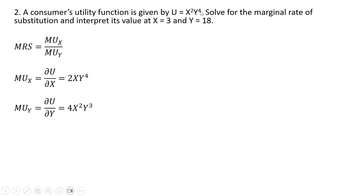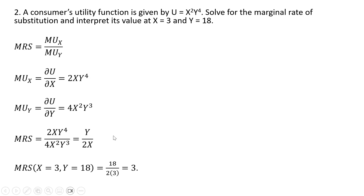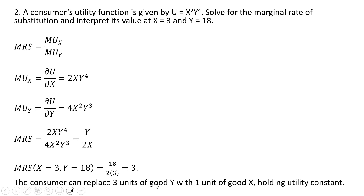For the marginal utility of good y, we look at y to the fourth power, bring down the 4 in front, don't do anything with x squared, and subtract 1 from the exponent on the y term, giving us y raised to the third power. Now forming the marginal rate of substitution — marginal utility of x divided by marginal utility of y — and simplifying, we get y divided by 2x. Plugging 18 in for y and 3 in for x, we get a marginal rate of substitution of 3. The consumer can replace 3 units of good y with 1 unit of good x holding utility constant.